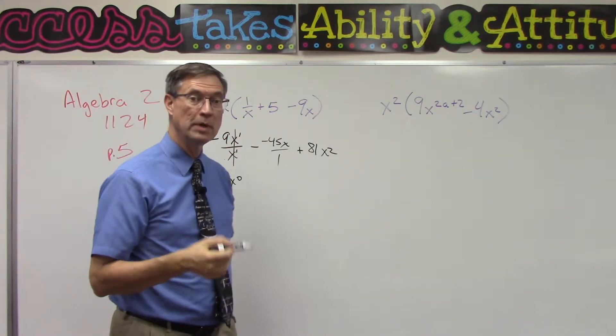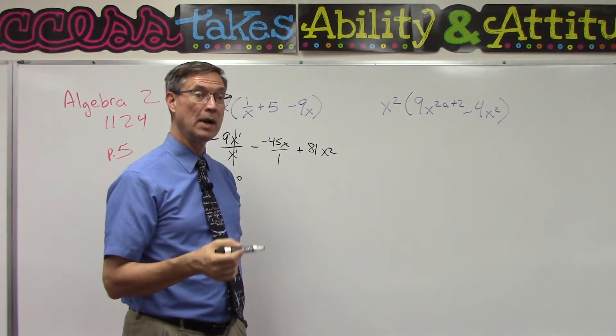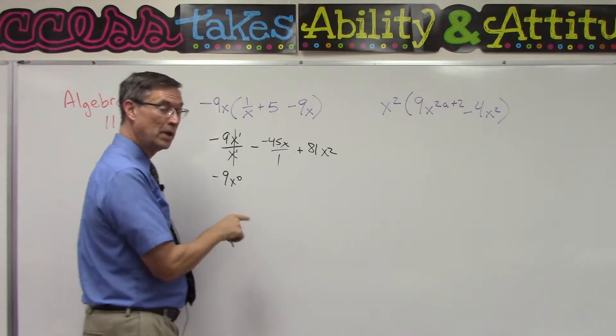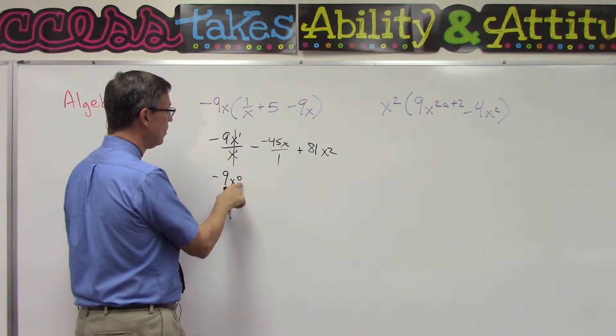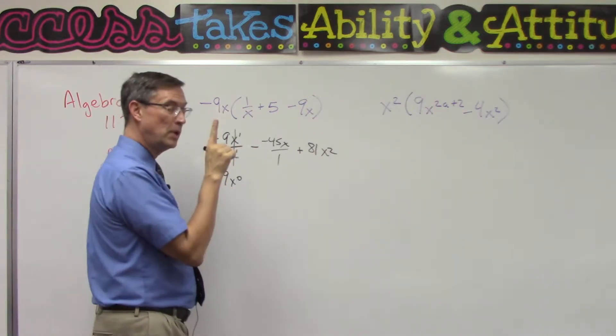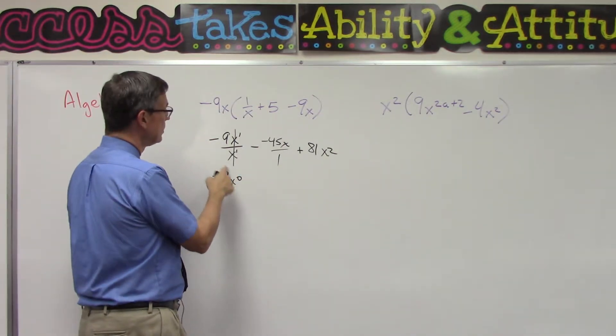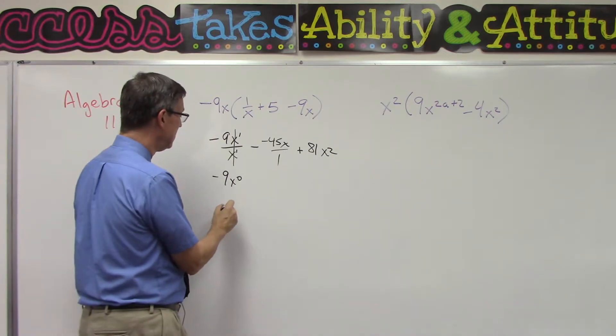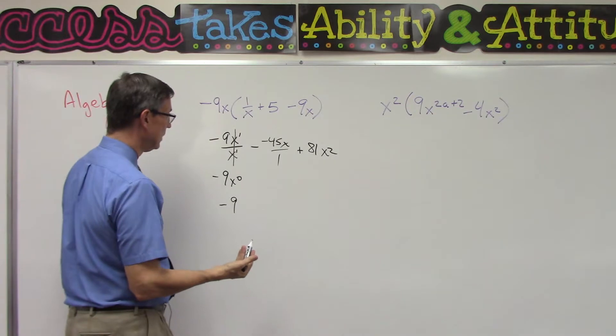Actually, you can kind of see that right here because x divided by x is literally going to cancel itself out, just like 3 over 3 is 1, 7 over 7 is 1, x over x is 1. But here's the algebra way of showing that: we subtract the exponents, we get 0, anything to the 0 power is 1. Now it only affects the x, the 0 is only attached to the x, so this whole thing does not become 1 or negative 1, it becomes negative 9 times 1, which is just negative 9.